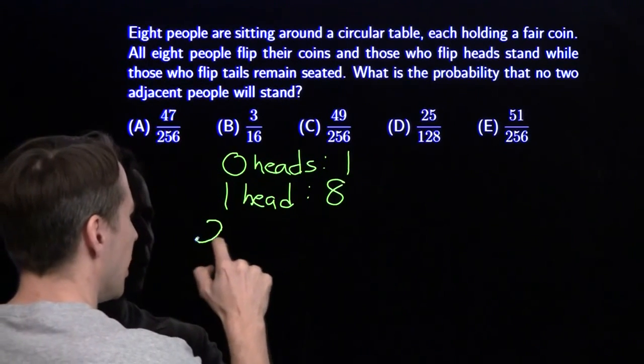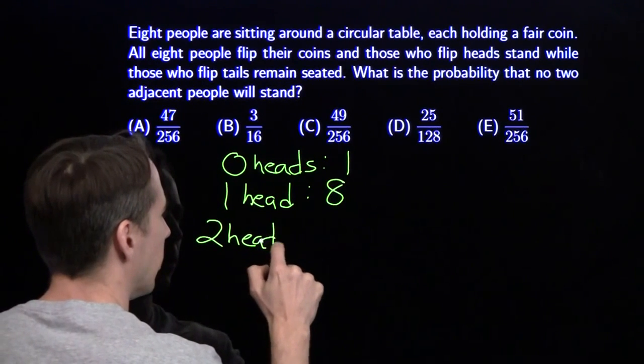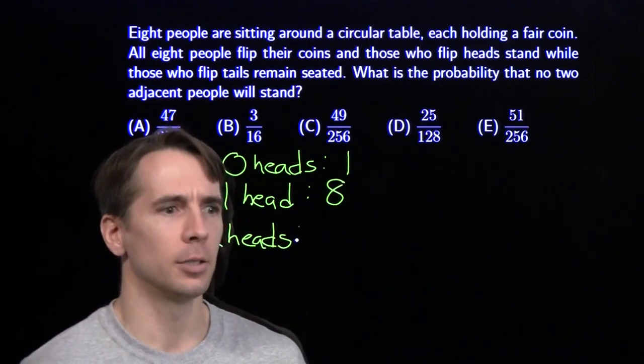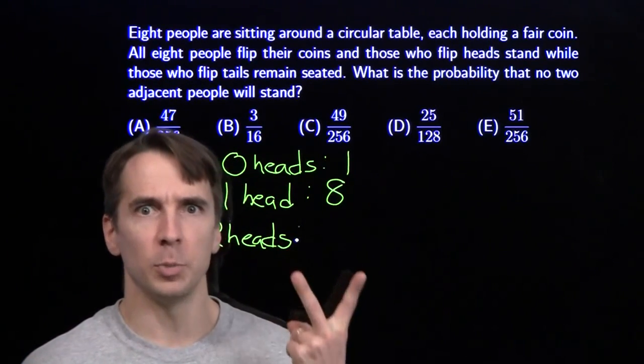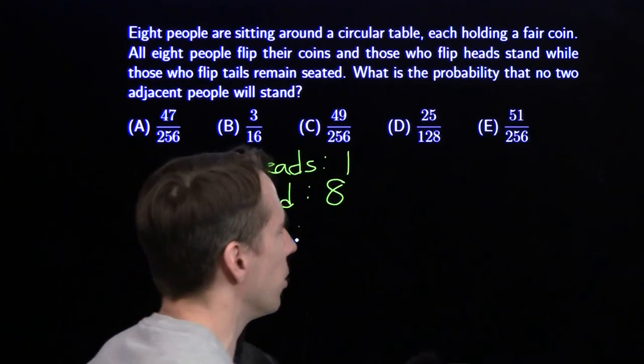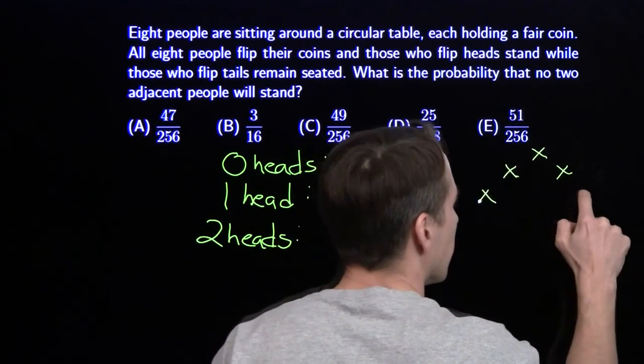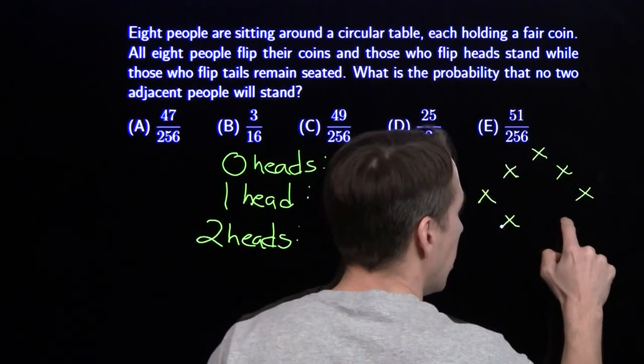Now what about two heads? Well, now we have to do a little thinking. Of course, there are eight choose two ways that we can pick two of these people that end up with heads, but sometimes they're going to be next to each other, so we're going to have to think about this a little bit. There are two ways we could go about this. We could go about this by counting all the ways we can have two people who aren't adjacent.